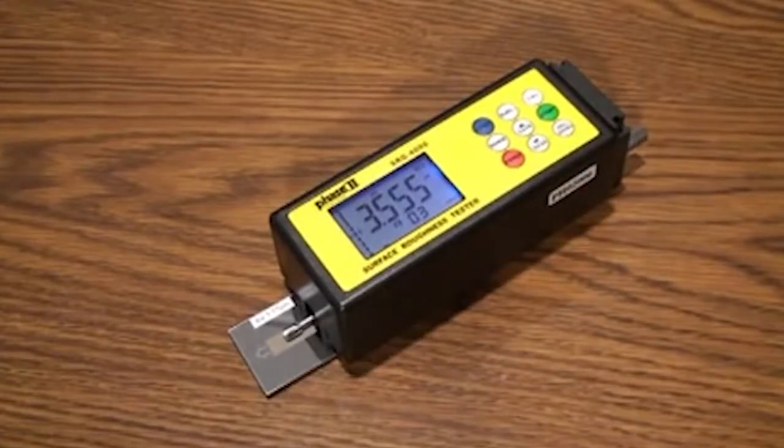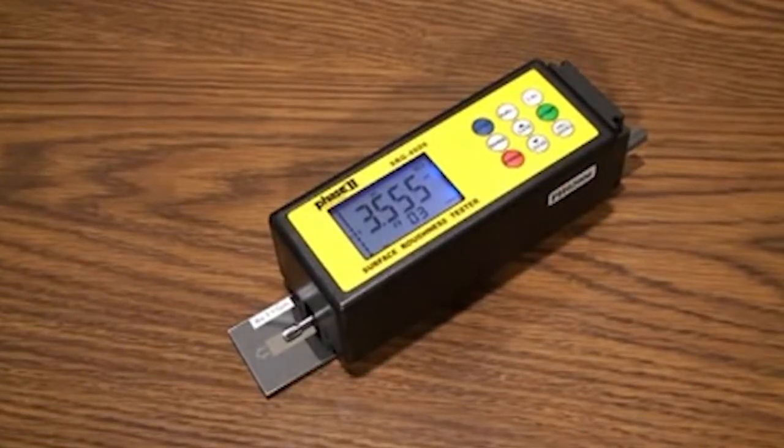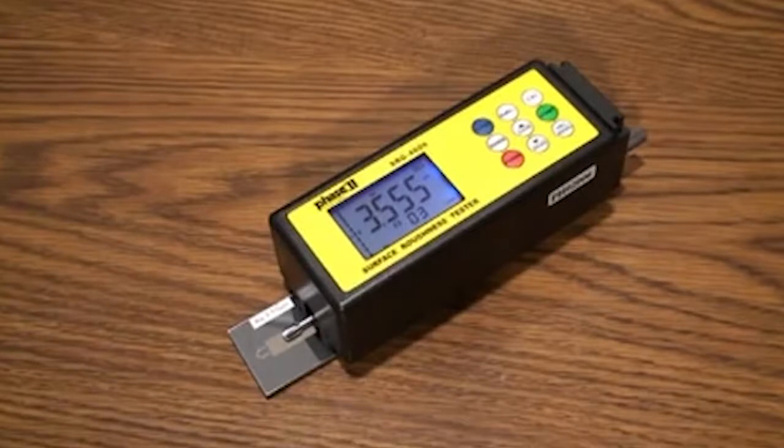As you can see, the SRG-4000 is a handheld battery powered instrument with graphic display and controls on top and an extended stylus, which will extract and retract upon taking surface roughness samples automatically.